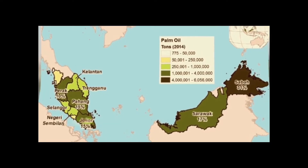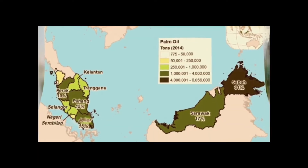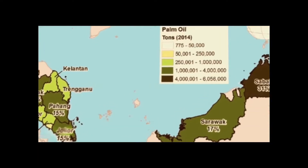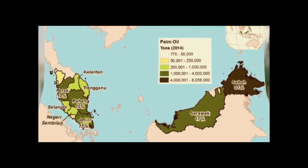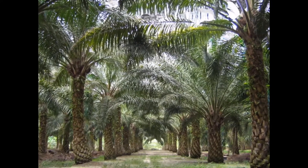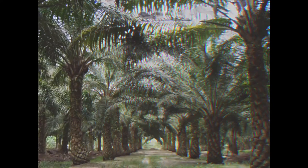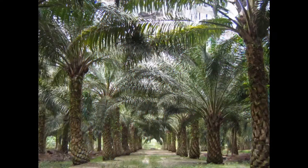As we all know, Malaysia is known as one of the largest producers of commodity for oil palm, ranking second place in Asia after Indonesia. The Malaysia Palm Oil Board is a government agency responsible for the promotion and development of the palm oil sector in the country.